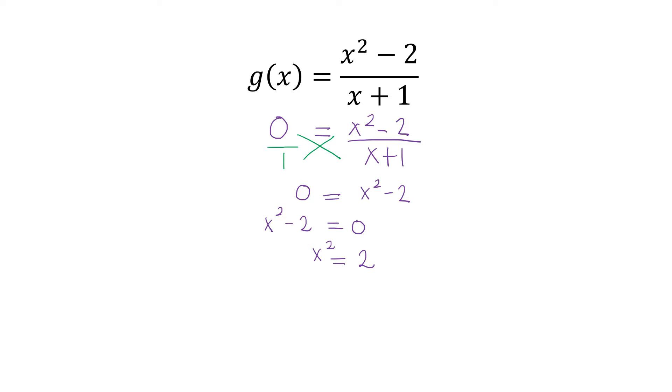And then to get rid of the square or the exponent 2, we have to get the square roots of both sides. Hence, square root of x² is x equals square root of 2 is positive negative square root of 2.